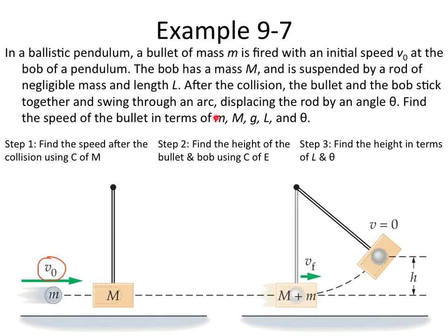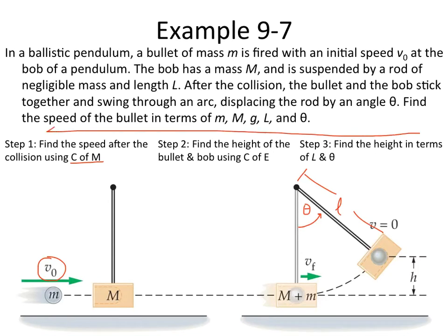We have our small mass m — the bullet — and our big mass M — the bob. g is gravity, L is the length of the pendulum, and theta is our angle. The pendulum swings up, and where it stops swinging up and is about to turn around and come back down, that's the height it rises to. There are two steps suggested: find the speed after the collision using conservation of momentum, and use conservation of energy for the swing. I'm actually going to do them backwards — starting at the end and moving back toward the front.